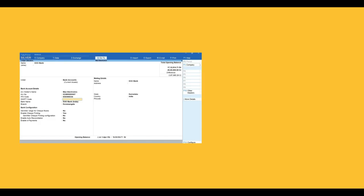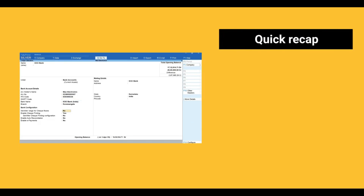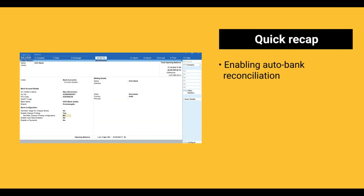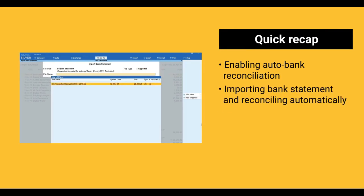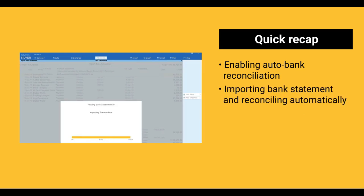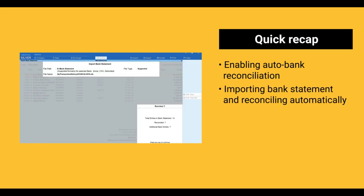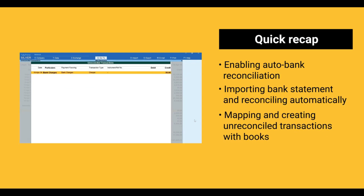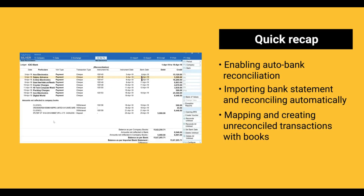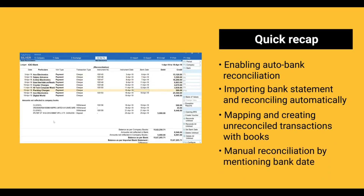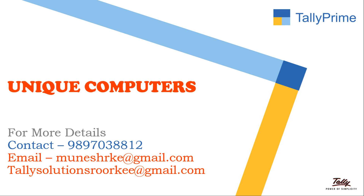Here is a quick recap of the things we learned: enabling auto bank reconciliation, importing the bank statement and reconciling automatically, mapping and creating unreconciled transactions with books, and manual reconciliation by mentioning the bank date.